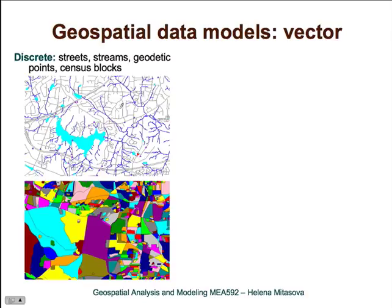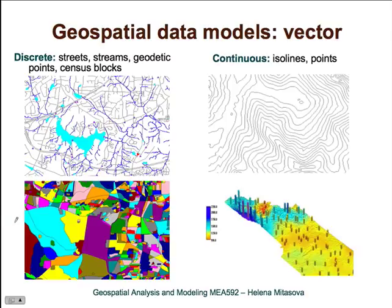Here we have a couple of examples. We have line data such as streams and streets, then point data such as geodetic points, and the area representation, for example census blocks. For continuous field representation, the most common is probably isolines or contours for representation of elevation data.